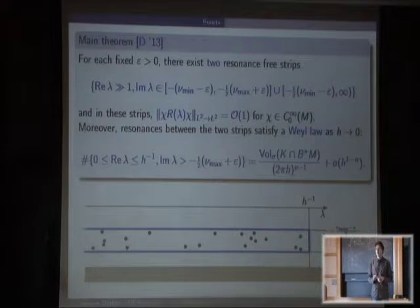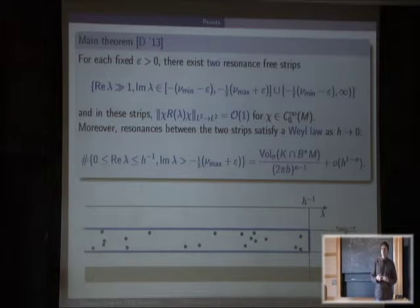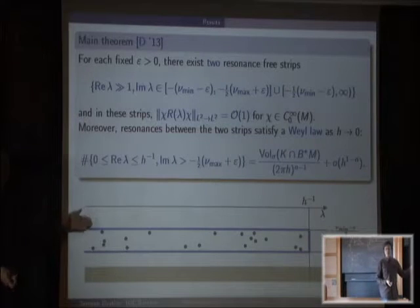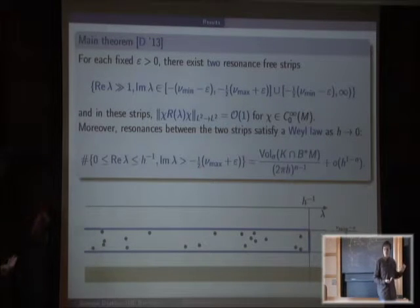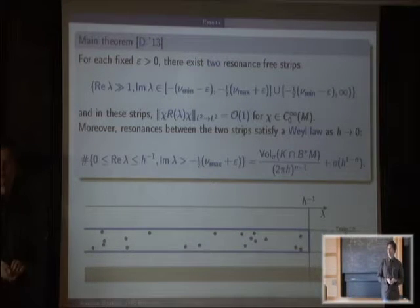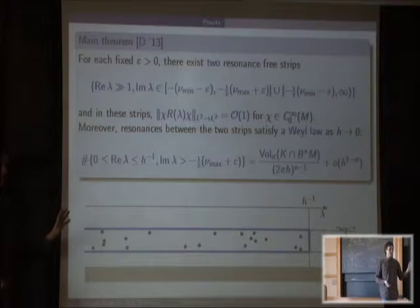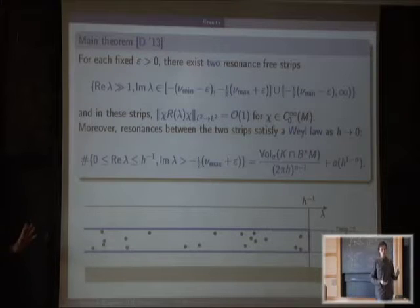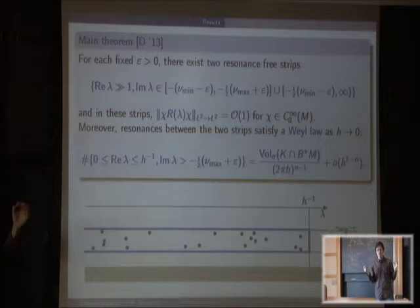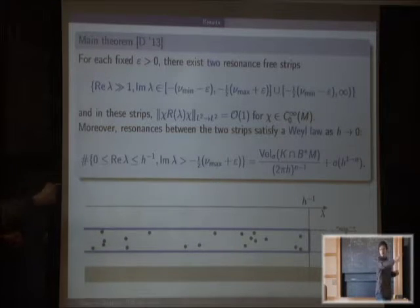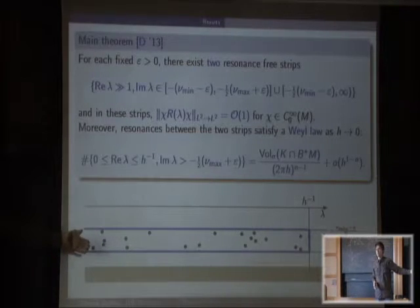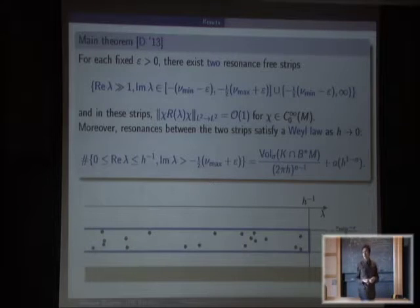In a non-trapping situation you have a logarithmic gap with no Weyl law. For a single obstacle the situation is non-trapping. For two obstacles you can get a single hyperbolic trapped trajectory — this is the work of Gérard–Sjöstrand — giving a single string of resonances. If you have at least three obstacles, you become fractal, so you don't have a model with this nice picture.